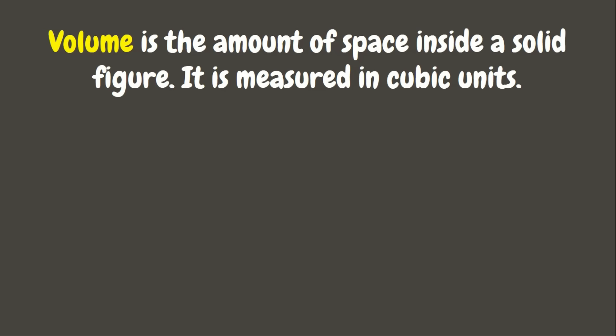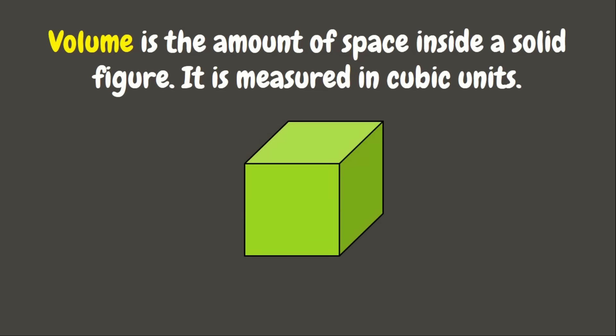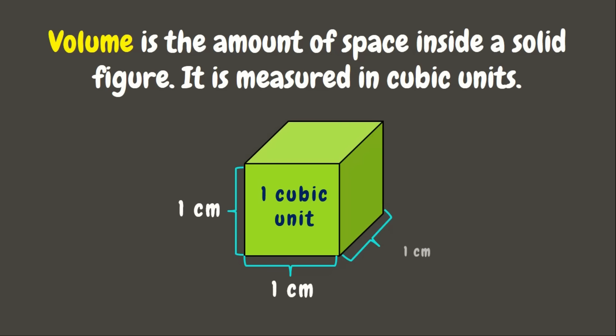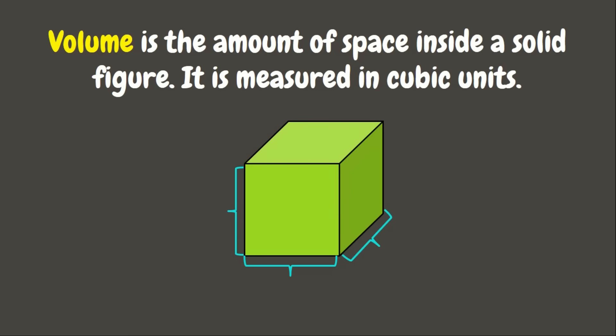Unlike area which is measured in square units, volume is measured in cubic units. A cubic unit is a cube whose sides measure one unit. If each side measures one centimeter, the volume will be one cubic centimeter. If they are one meter, it will be one cubic meter.